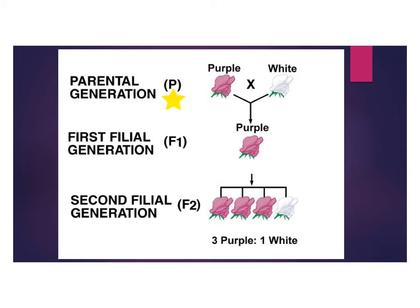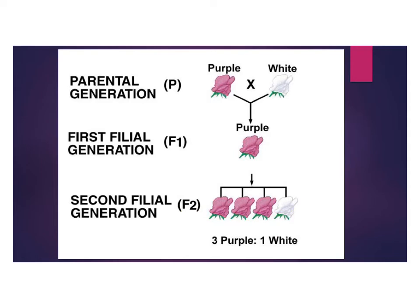This first generation we call the P generation for parental. The second generation we call F1, which stands for filial, meaning brother. In the next generation — the second filial generation, or F2 — when you breed two of those F1 plants together, you get a strange result: three with one trait and one with the other, so three purple and one white.